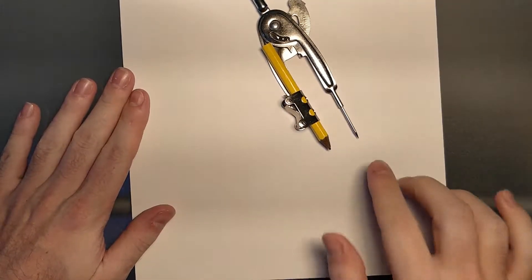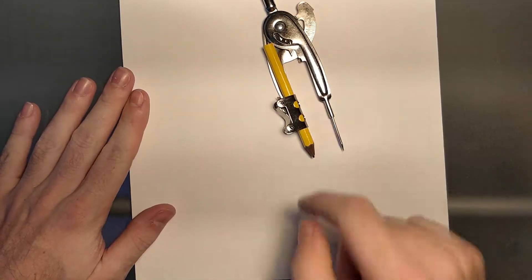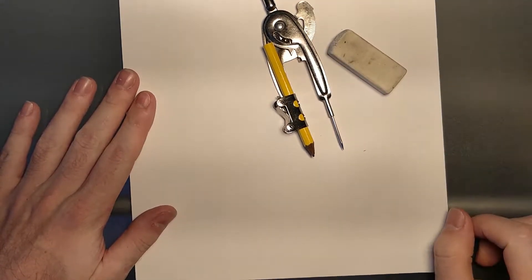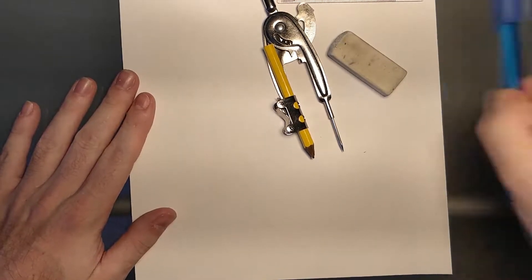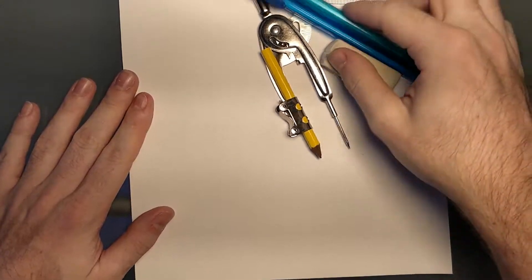First we're going to get ourselves a bunch of white paper. I've got a whole bunch because I'm working on a glass tabletop and we want our compass point to be able to actually stick into it. We're going to need an eraser, a straight edge, and a pen or two.